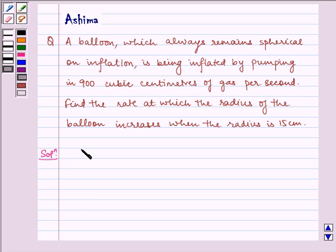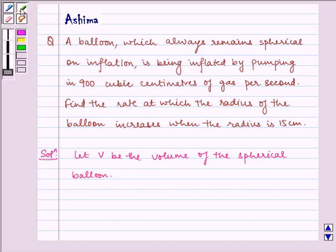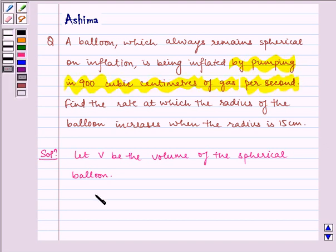Let V be the volume of the spherical balloon. It is given to us that the balloon is inflated by pumping in 900 cubic centimeters of gas per second. Therefore, it means dV by dt is equal to 900.